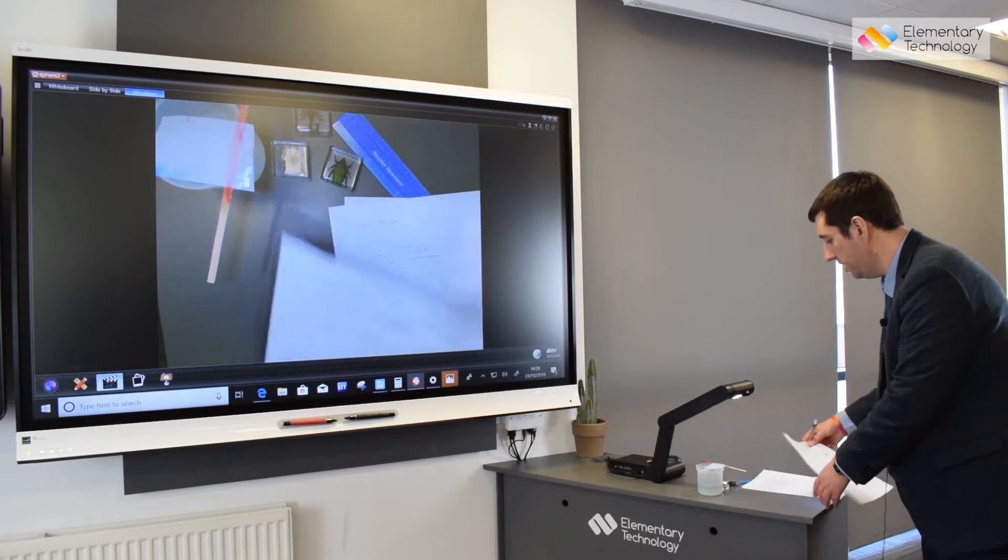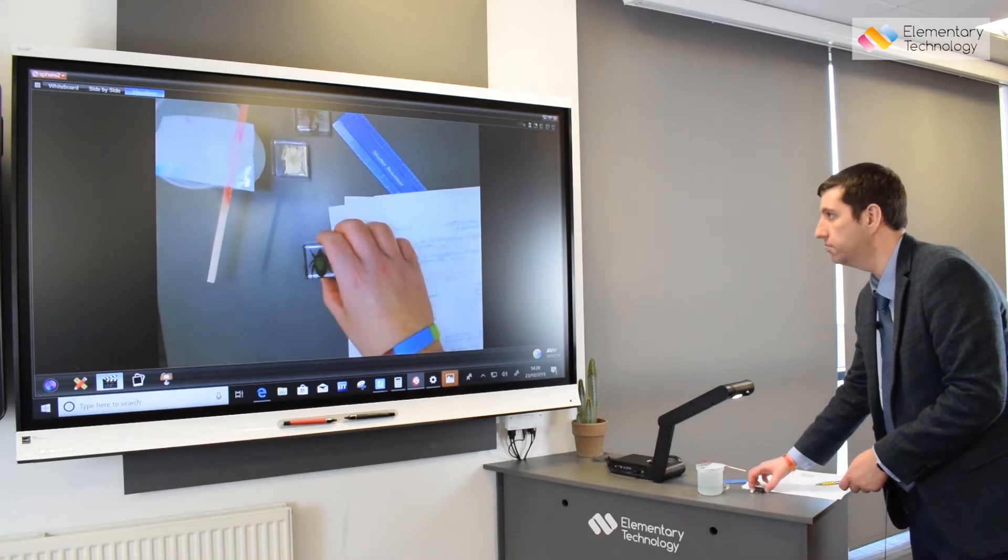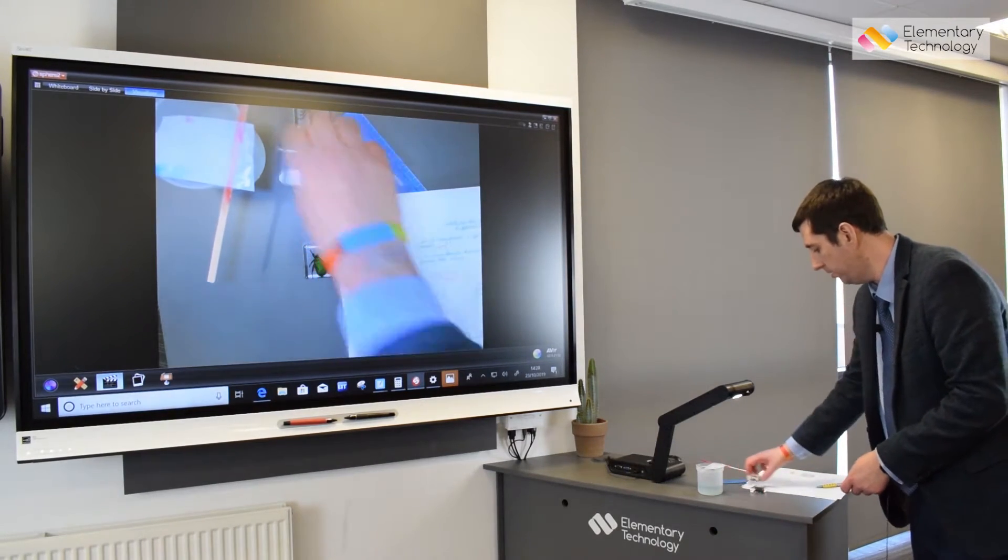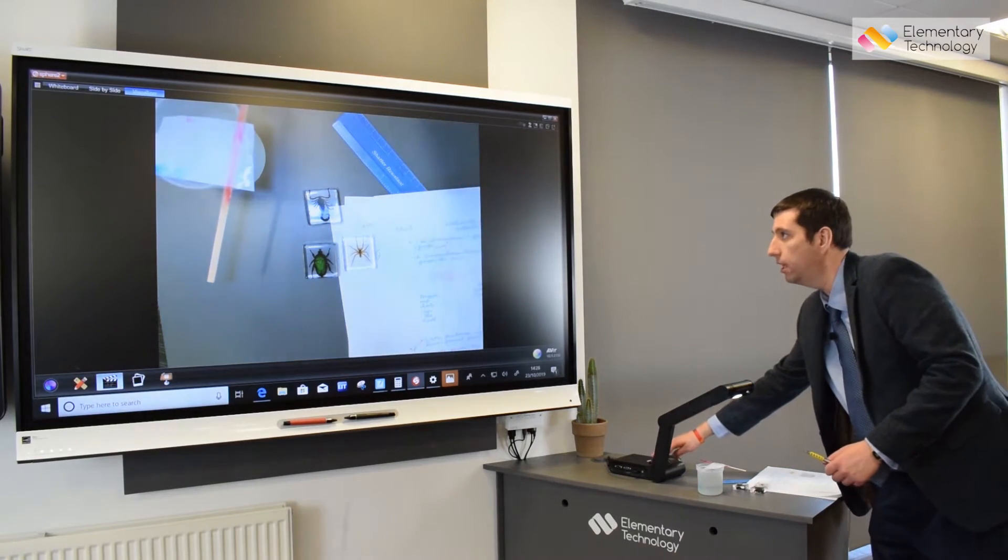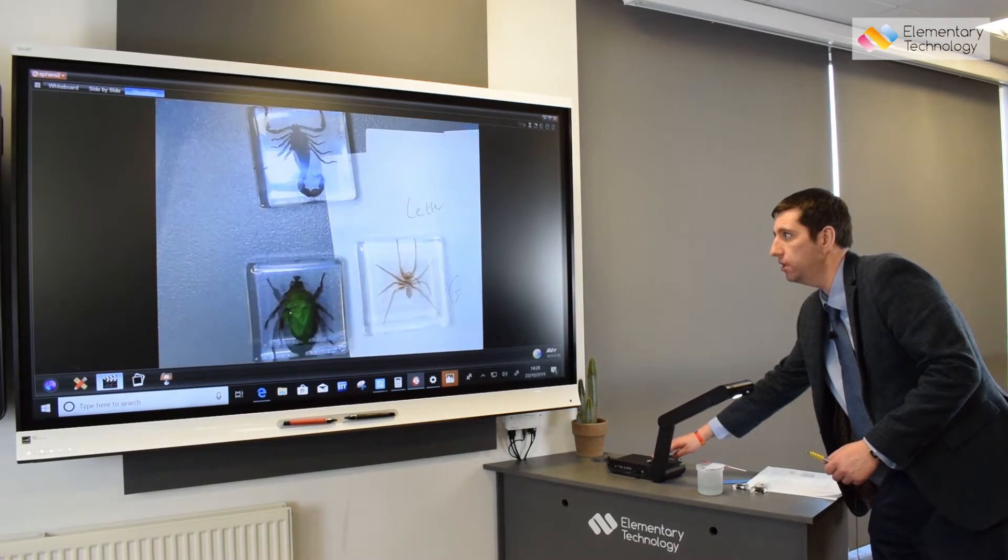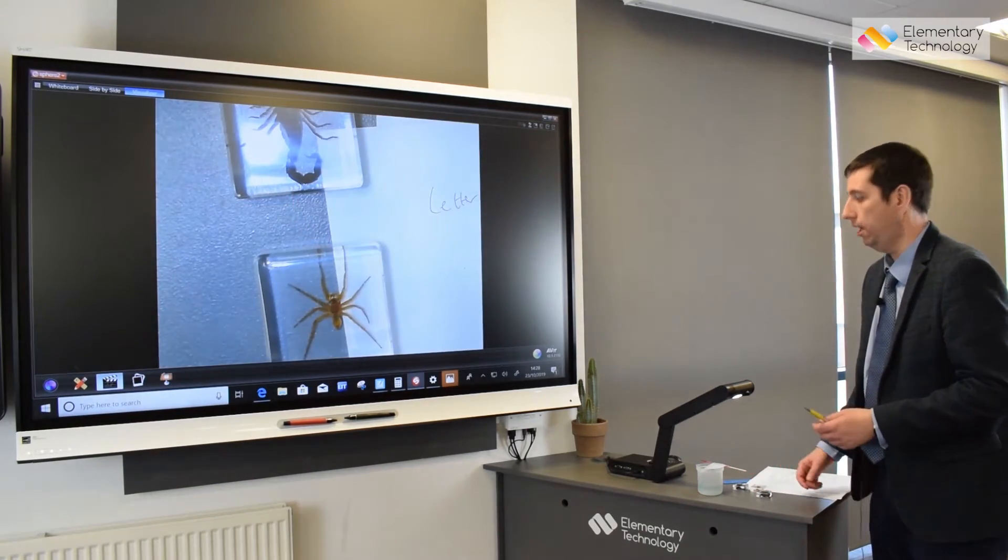Another technique is viewing really small objects. I've got here some artefacts of beetles and a scorpion, and I can zoom in and look at those things a bit closer. I can then ask questions about them.